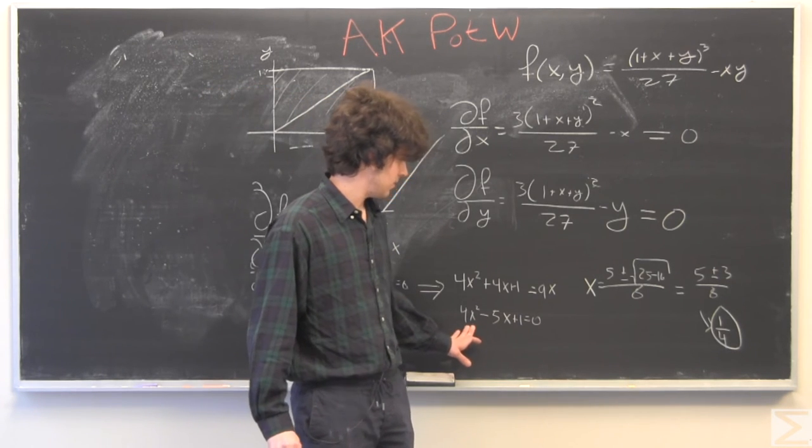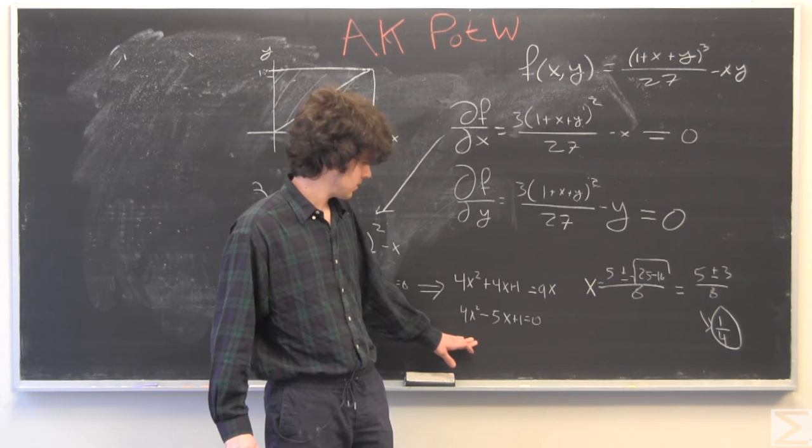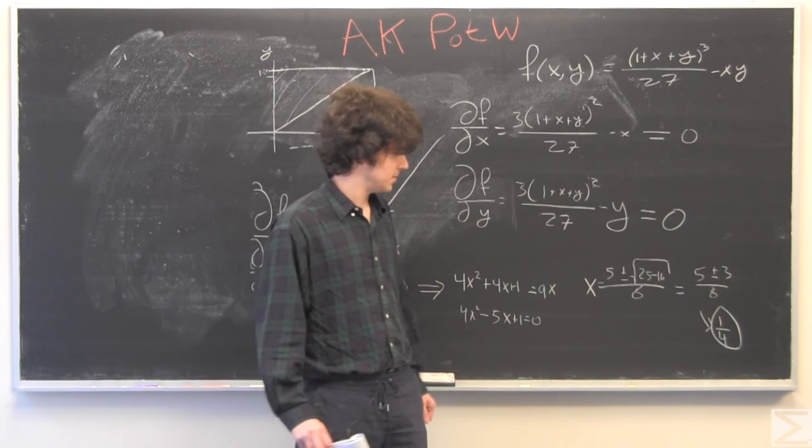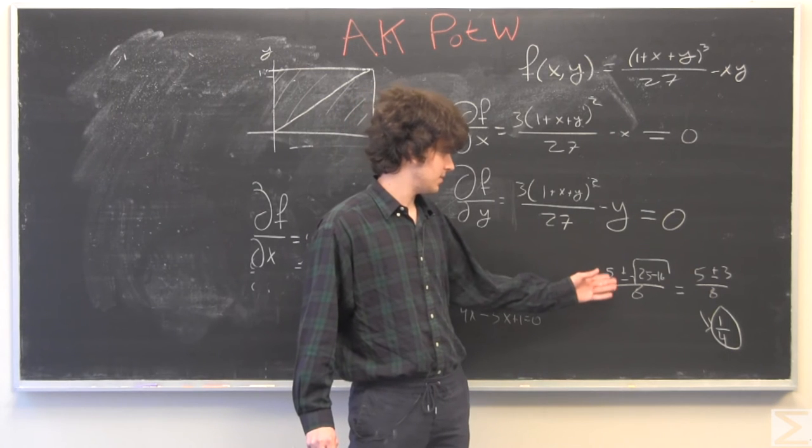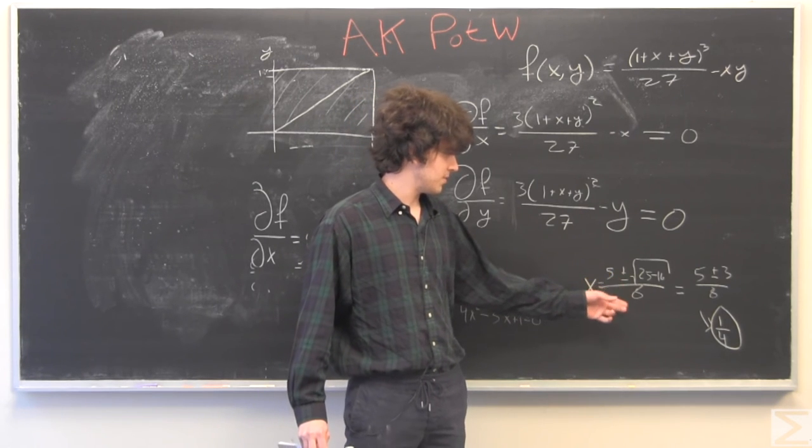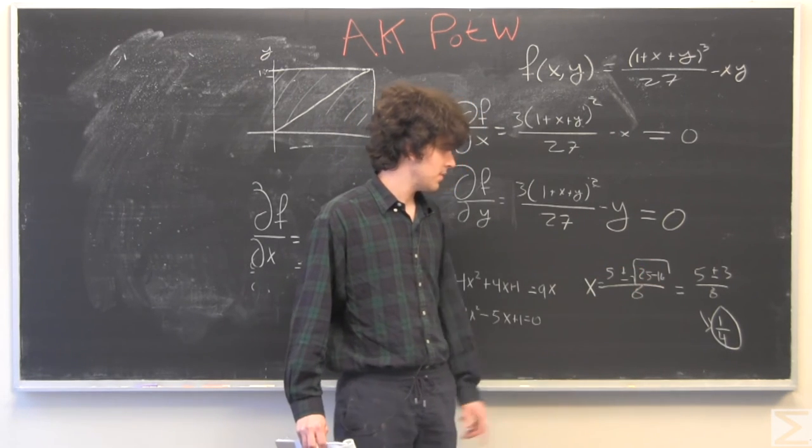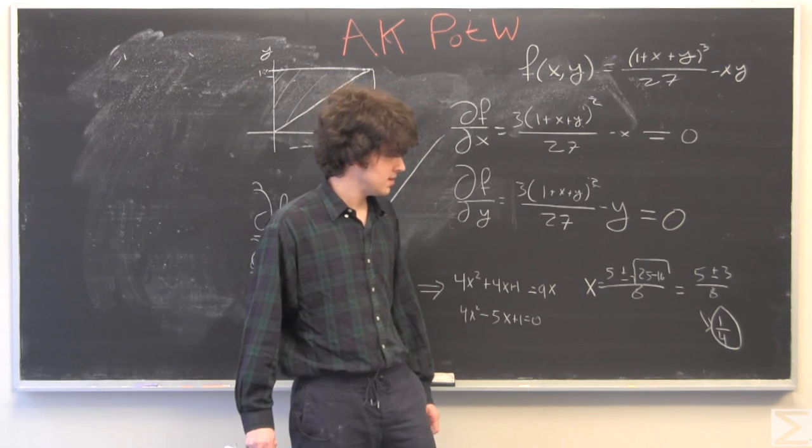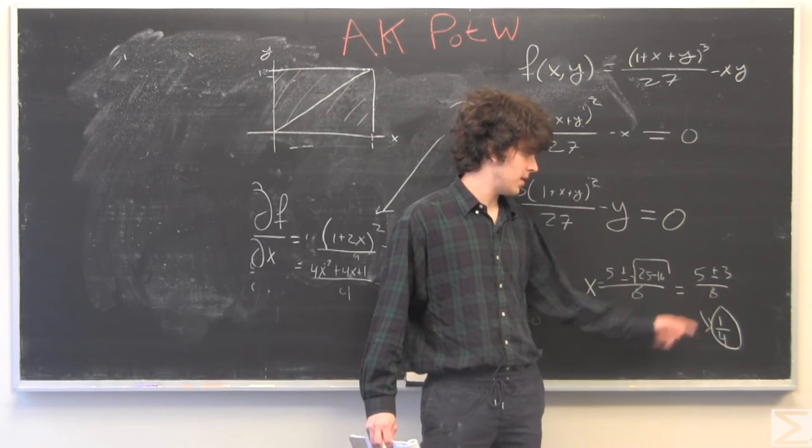And so using the song that you probably learned, we have x equals 5 plus or minus the square root of 25 minus 16 over 8. So that gives us 5 plus or minus 3 over 8.